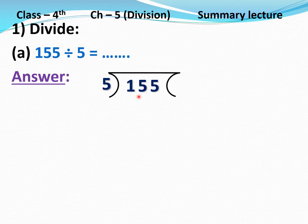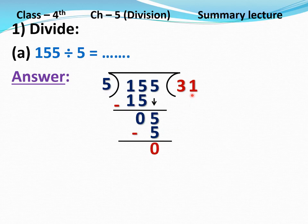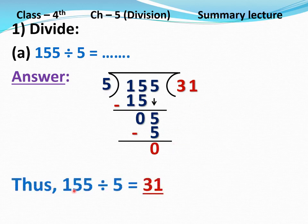It should not be greater than 15. See, 5 multiplied by 3 equals 15. Now we will do subtraction: 5 minus 5 is 0, 1 minus 1 is 0. Now we will take the next number, that is 5. 5 minus 5 is 0. Quotient equals 31, remainder equals 0. Thus 155 divided by 5 equals 31. Clear?